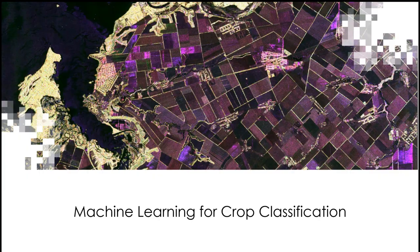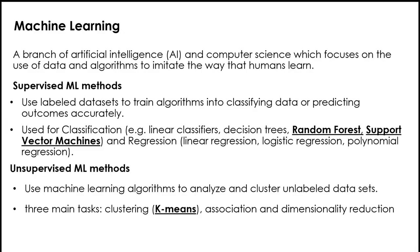First, let me briefly recap what machine learning is. Machine learning is a branch of artificial intelligence and computer science which focuses on the use of data and algorithms to imitate the way that humans learn. There are two basic approaches: supervised learning and unsupervised learning. The main difference is that supervised learning uses labeled or training data to help predict outcomes while unsupervised does not. Supervised learning can be separated into classification and regression problems. Classification problems use an algorithm to accurately assign test data into specific categories — for example, separating apples and oranges, or differentiating between crops in satellite imagery.